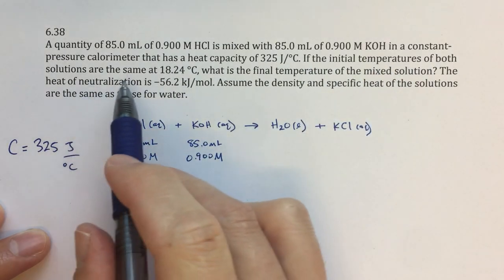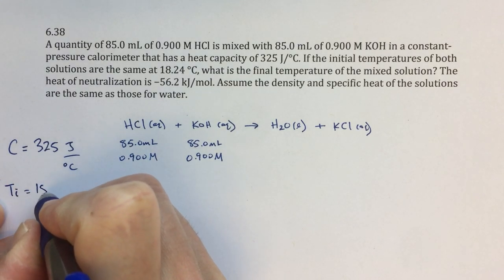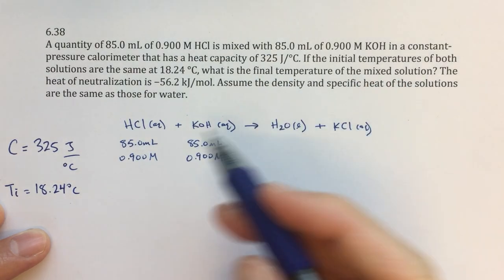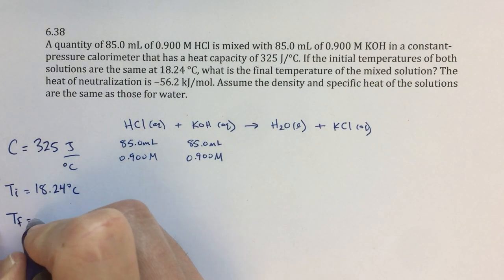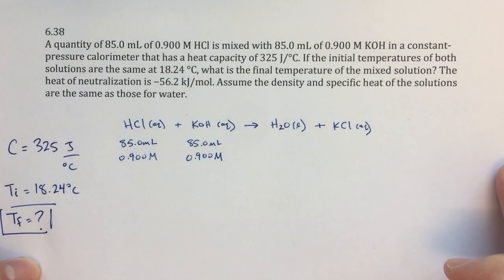If the initial temperature of both solutions are the same, so that's going to be my T initial equals 18.24 degrees Celsius. What is the final temperature of the mixed solution? So what we're looking for is T final, so I'm going to sort of highlight that. That is what my goal is for this problem.